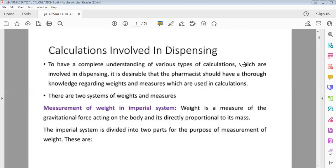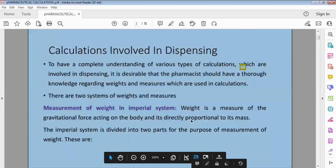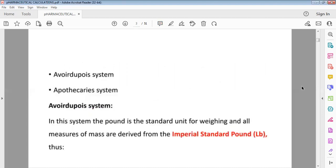Our main measurement of weight is the imperial system. Weight is a measure of the gravitational force acting on the body and is directly proportional to mass. The imperial system is divided into two parts for measurement of weight: avoirdupois and apothecary system, both are units for weight.